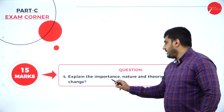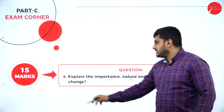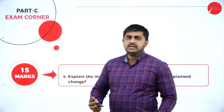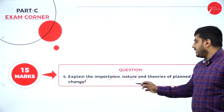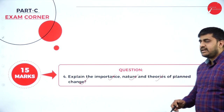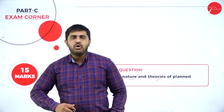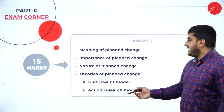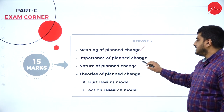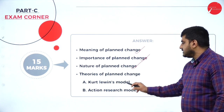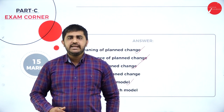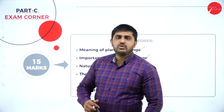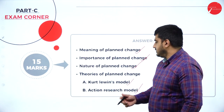The fourth question: explain the importance, nature, and theory of planned change — this is from Unit 3. Give one definition of planned change, then explain the importance, then the nature and theories. There are two theories: Kurt Lewin's model — unfreezing, changing, and refreezing — and the action research model — diagnosing, analyzing, coming out with action plans, taking actions, and evaluating. Write all of these for 15 marks.